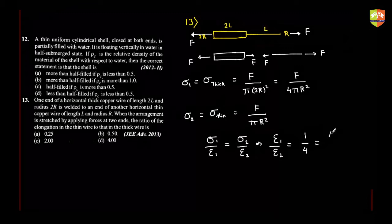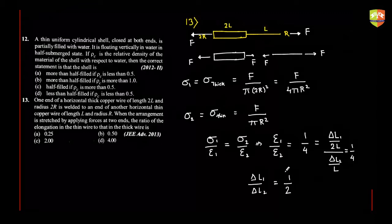So delta L1 divided by 2L, divided by delta L2 divided by L, equals 1 by 4. From here, delta L1 by delta L2 equals 1 by 2. So the elongation of the thin wire is two times the elongation of the thick wire.